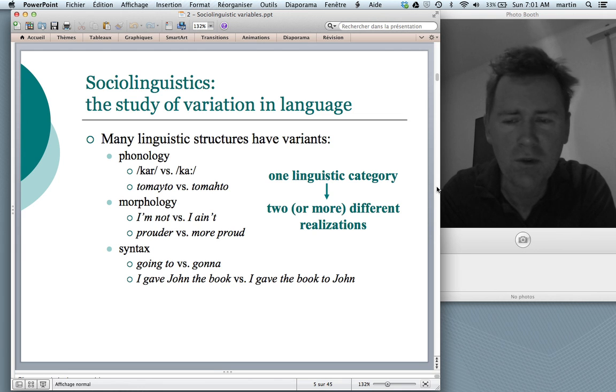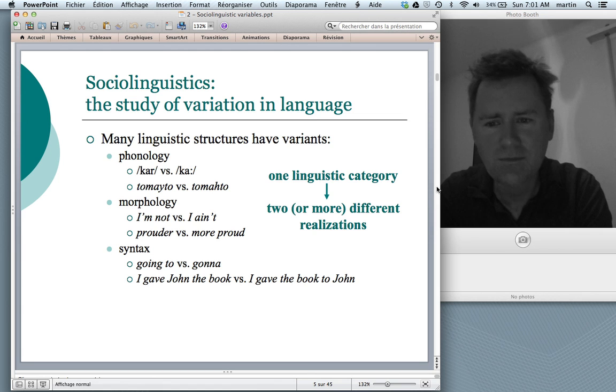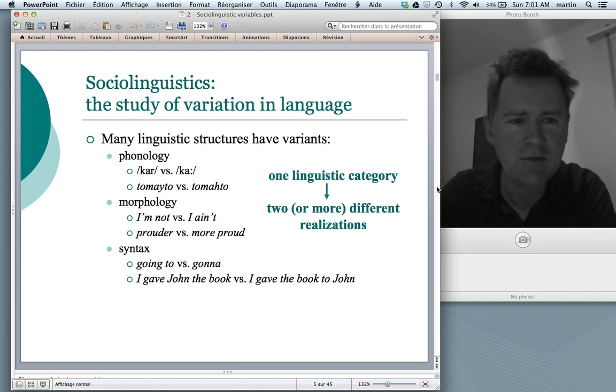Variation also happens in morphology. Think for instance of negation, the way you can negate a sentence. You could either say I'm not going or you could say I ain't going. And the people who say I ain't going aren't necessarily the same as those saying I'm not going. So social groups use different variants. There are also variants that are not necessarily related to anything social. For instance, the distinction prouder or more proud. There's not a social group that would always use more proud instead of prouder. Rather, this is something that is not socially conditioned.